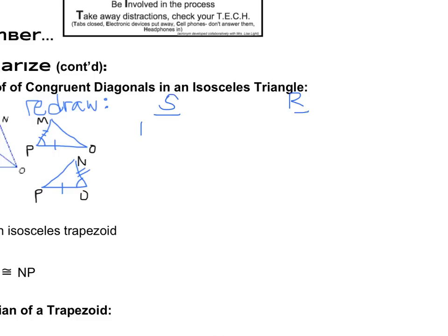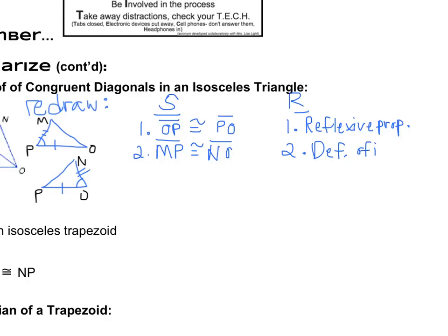So our first one is that we can say that OP is congruent to itself, or is congruent to PO, rather. And that's just stating the exact same thing, it's the reflexive property. For number two, the second statement we can say that the second tick mark pair there, MP, is congruent to NO. And the reason for that is because those legs are congruent. That's just a definition of an isosceles trapezoid.